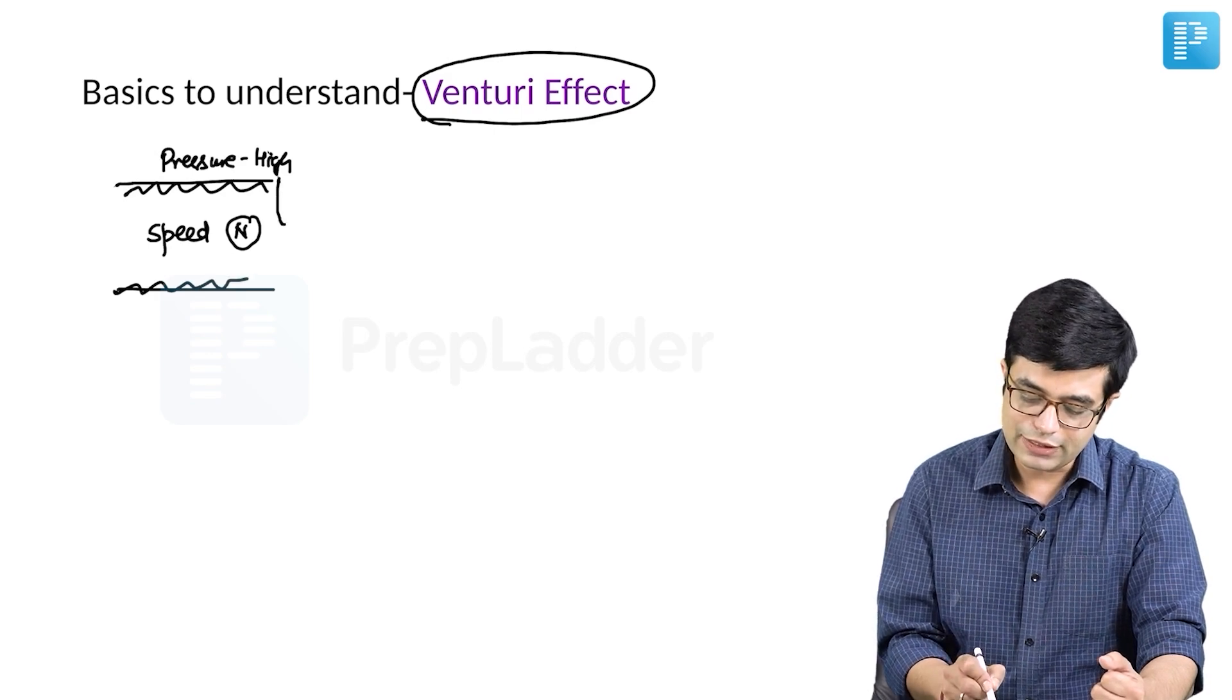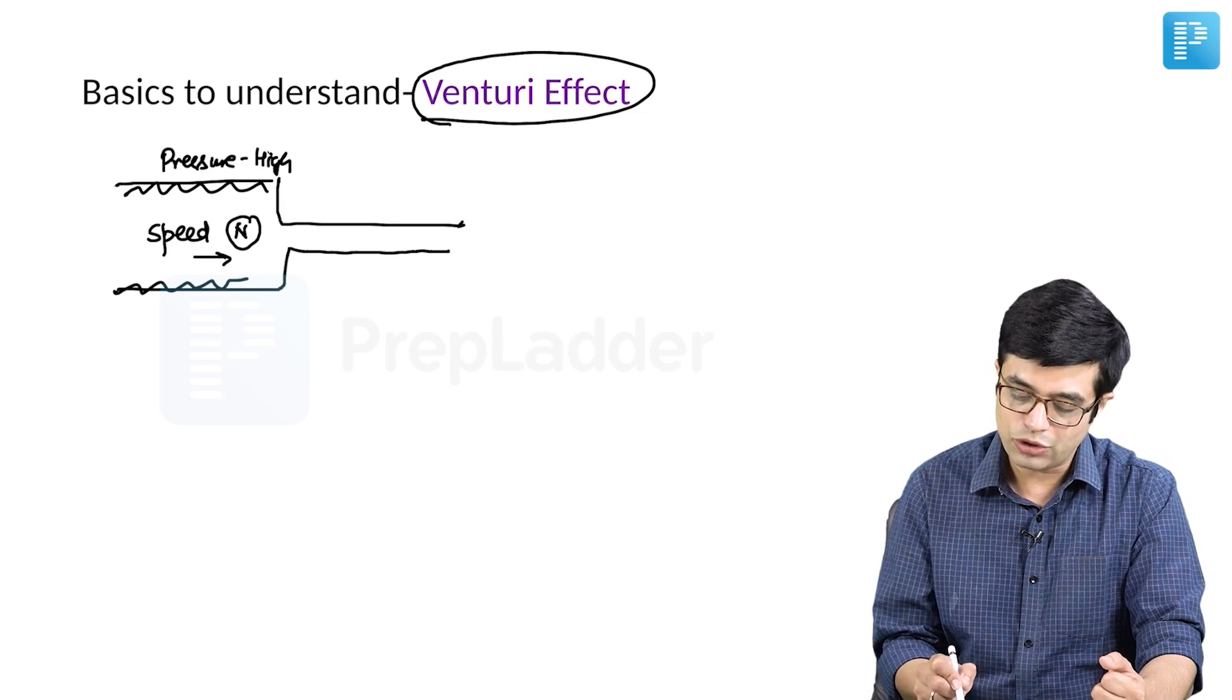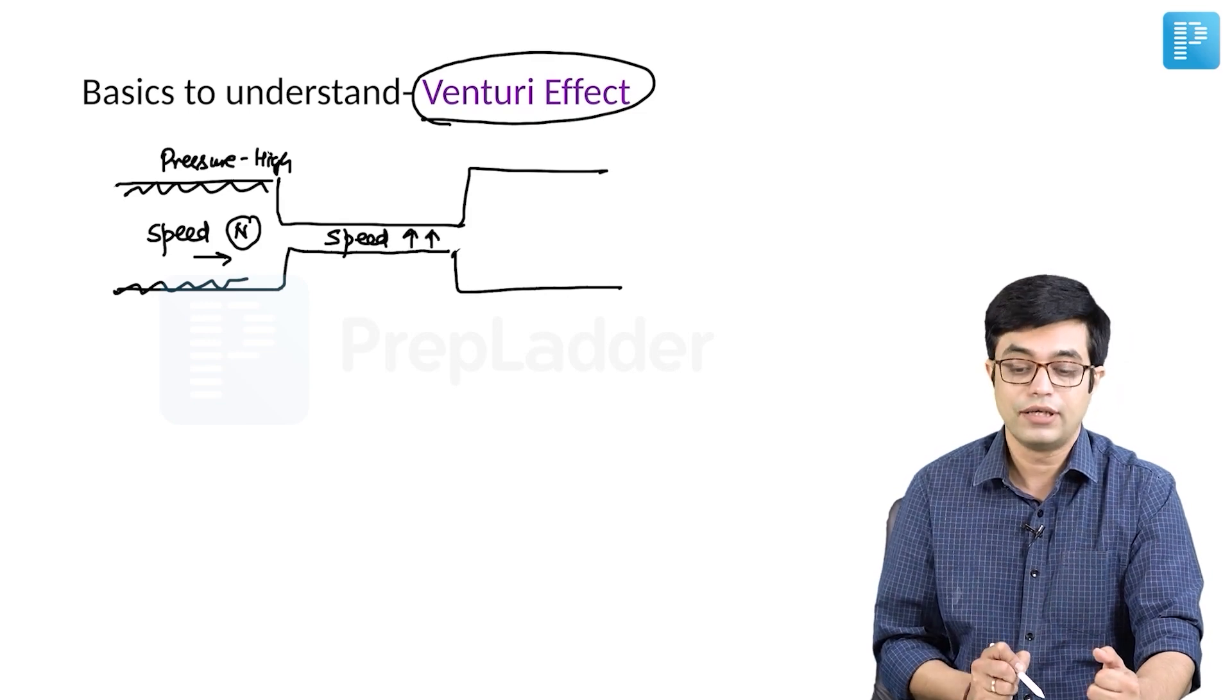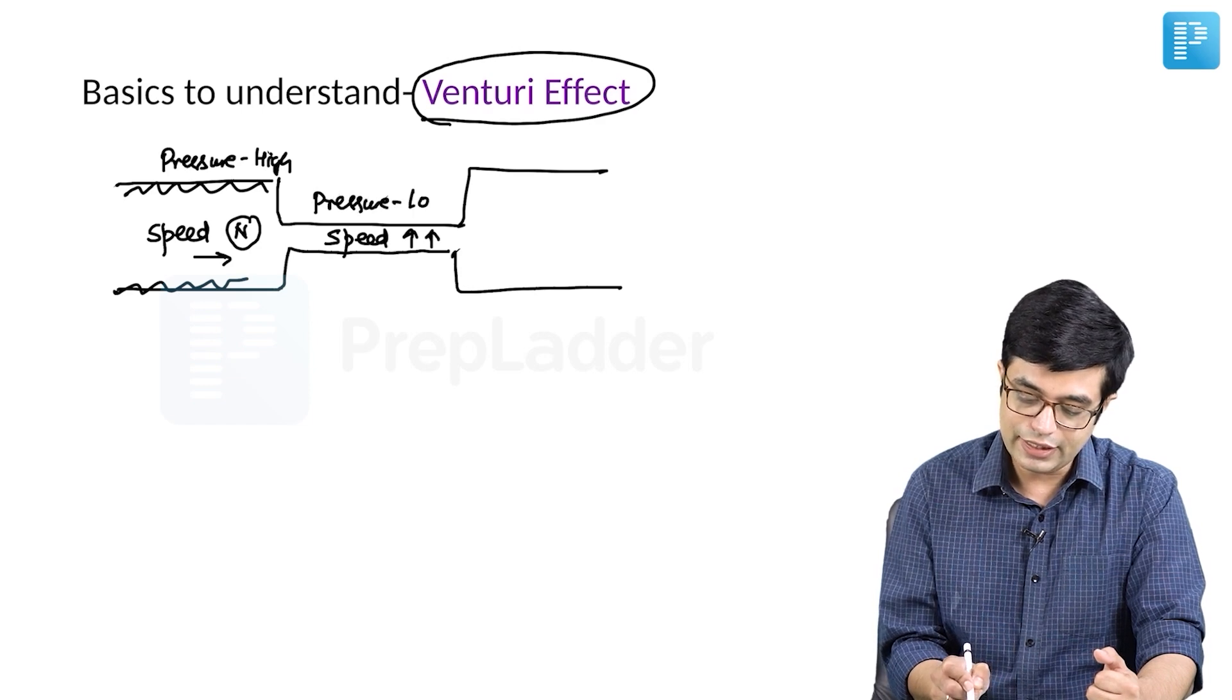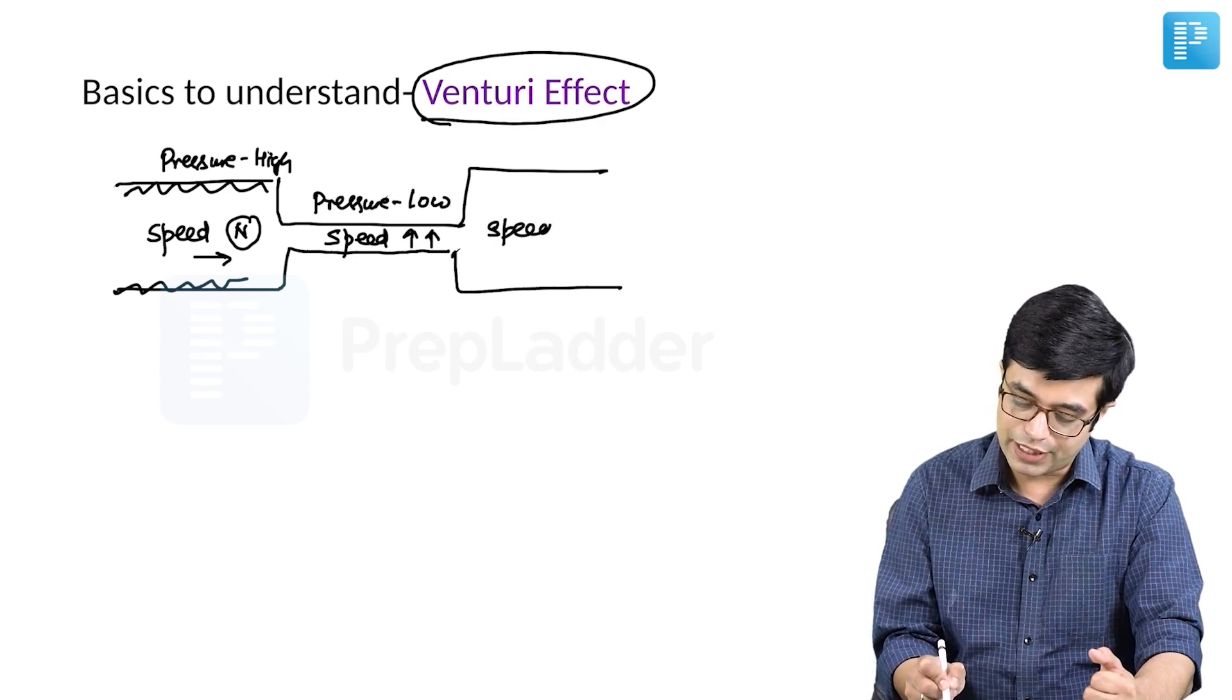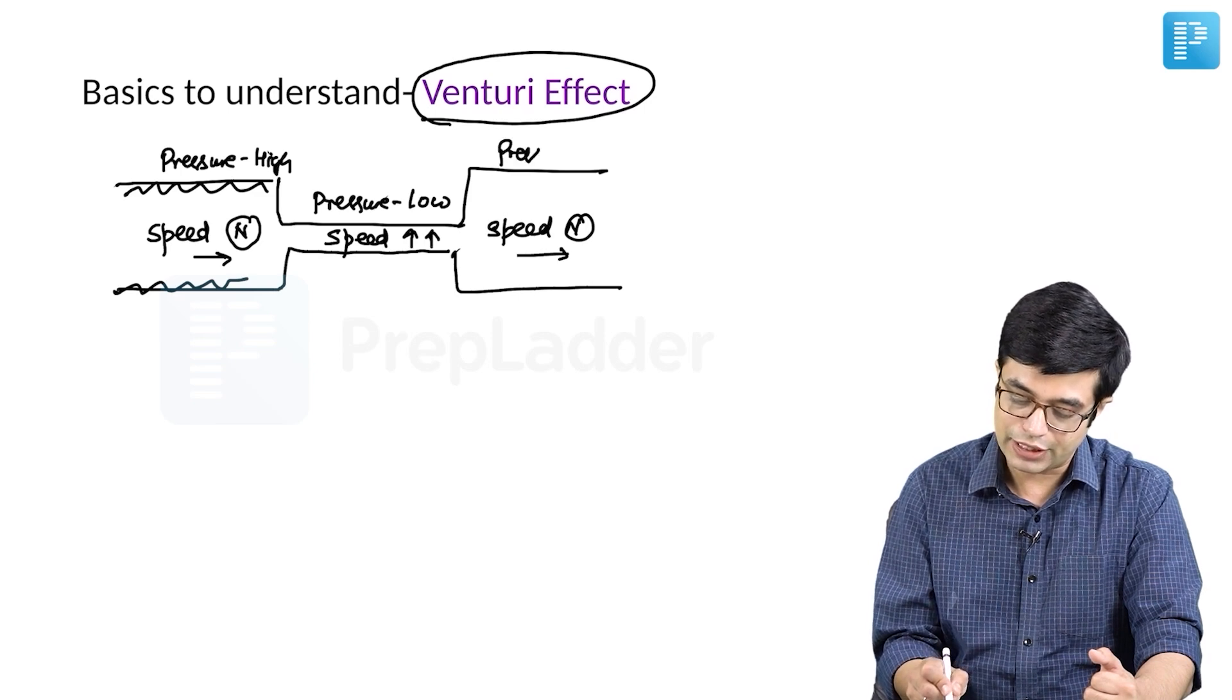Venturi effect says whenever this flowing fluid tends to pass suddenly through a narrow tube, it is found that the speed tends to increase in this narrowed segment, whereas the pressure which was initially high, it tends to fall. And as it moves into a dilated area again, the speed becomes normalized, whereas the pressure again becomes higher.